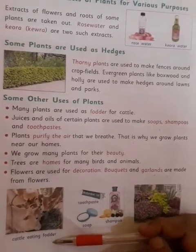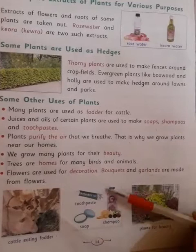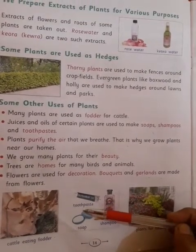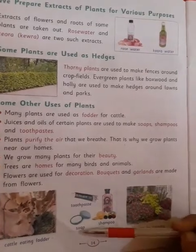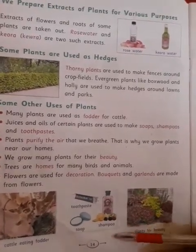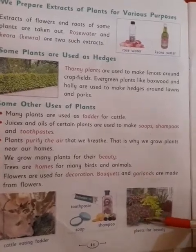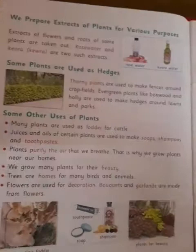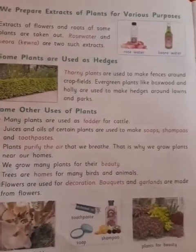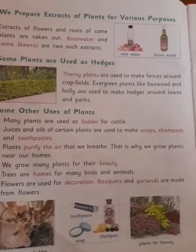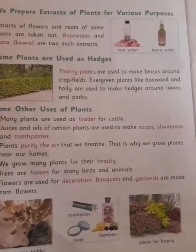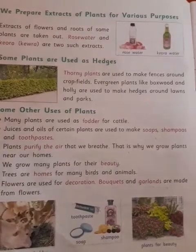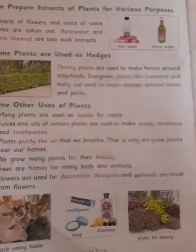From different plants we take out juices and oils to make soaps, toothpastes, and different types of shampoos. Some plants are used for their beauty. Plants are useful to us in different ways — they give us many things that we use in our daily life, and they make the air fresh and clean. So plants are very important for us. This concludes our revision.